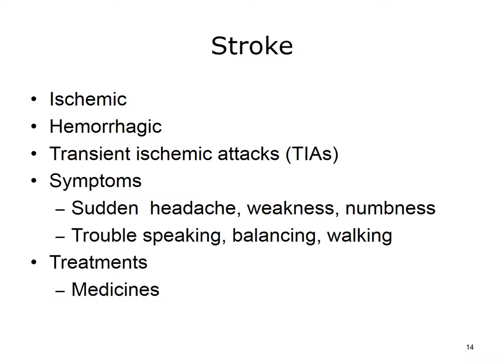A cerebrovascular stroke occurs when blood flow to your brain stops. Within minutes, brain cells begin to die. There are two kinds of stroke. The more common kind is called ischemic stroke and is caused by a blood clot that blocks a blood vessel in the brain. The other kind, called a hemorrhagic stroke, is caused by a blood vessel that breaks and bleeds into the brain. Transient ischemic attacks, or TIAs, occur when the blood supply to the brain is briefly interrupted.